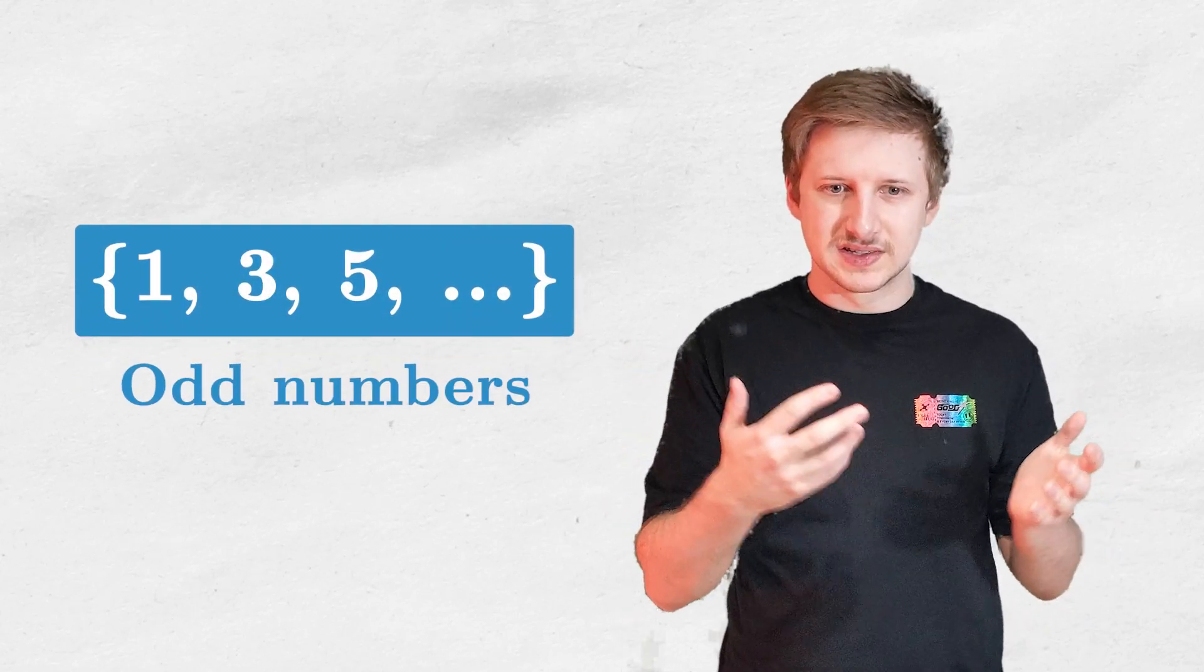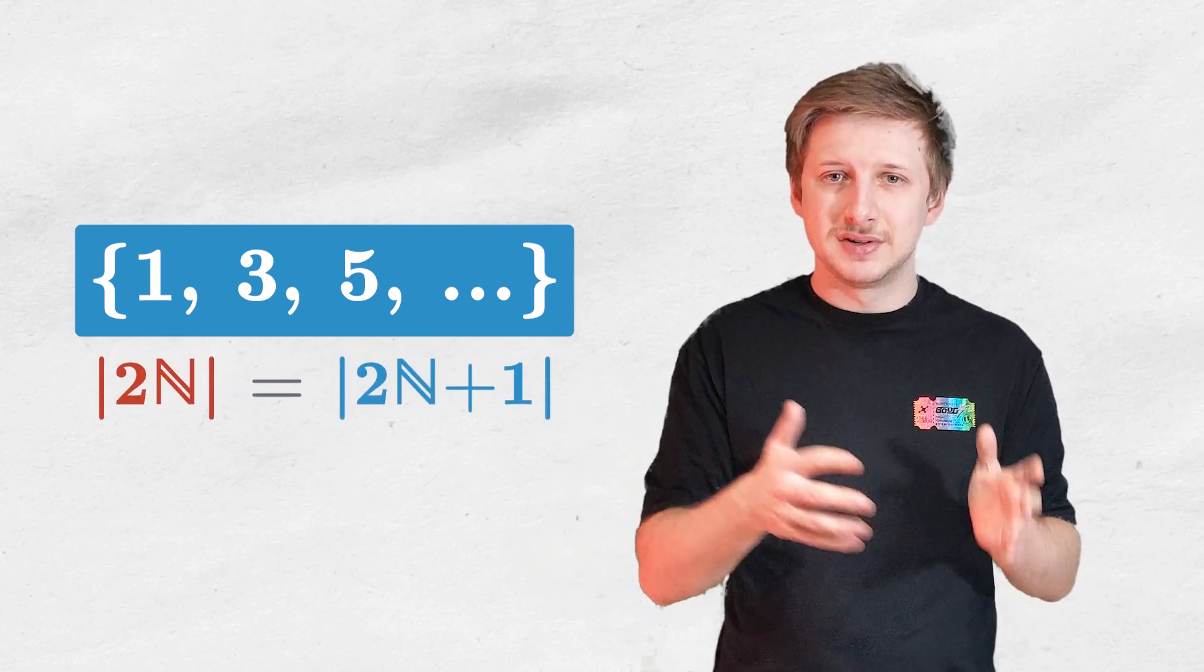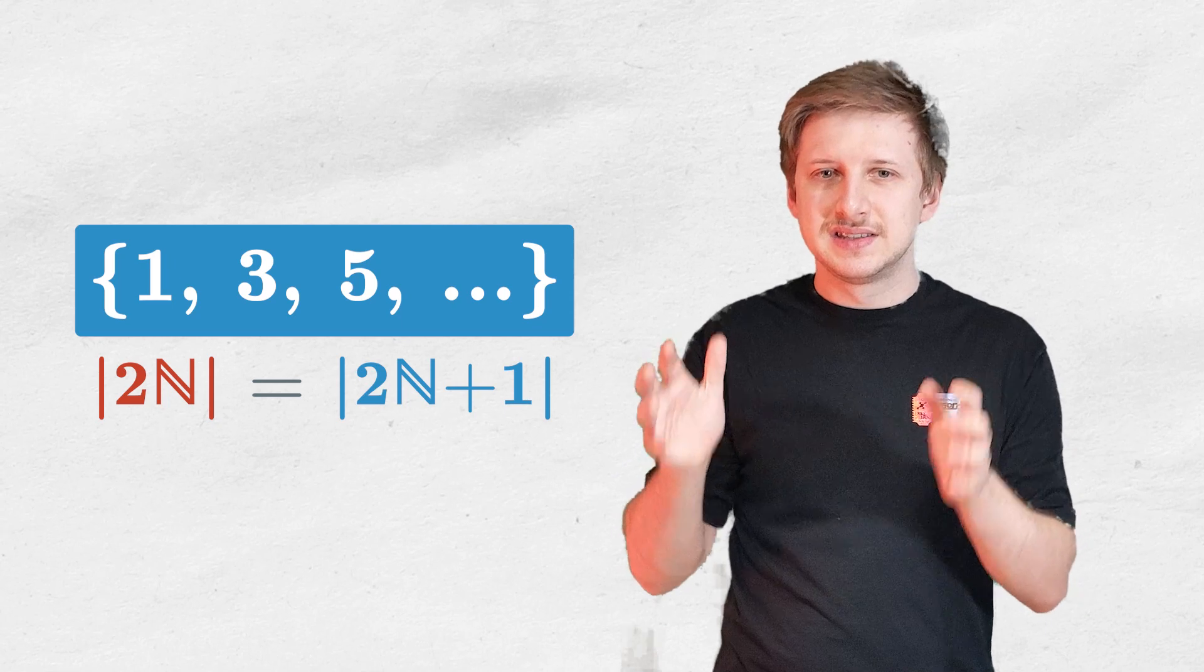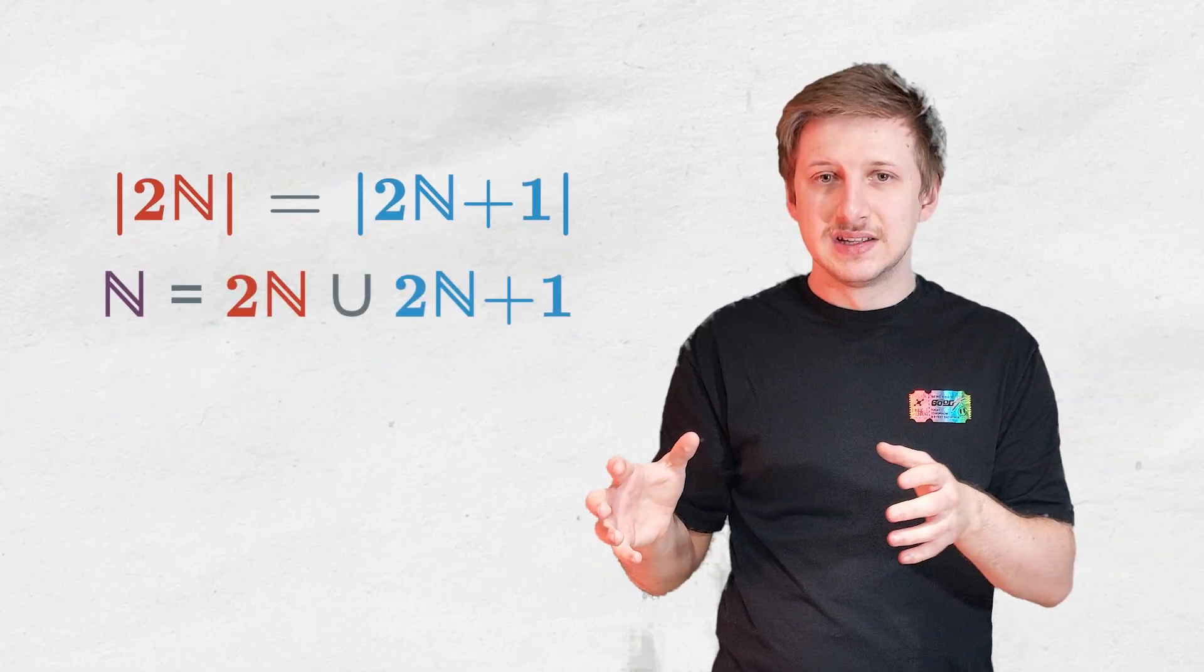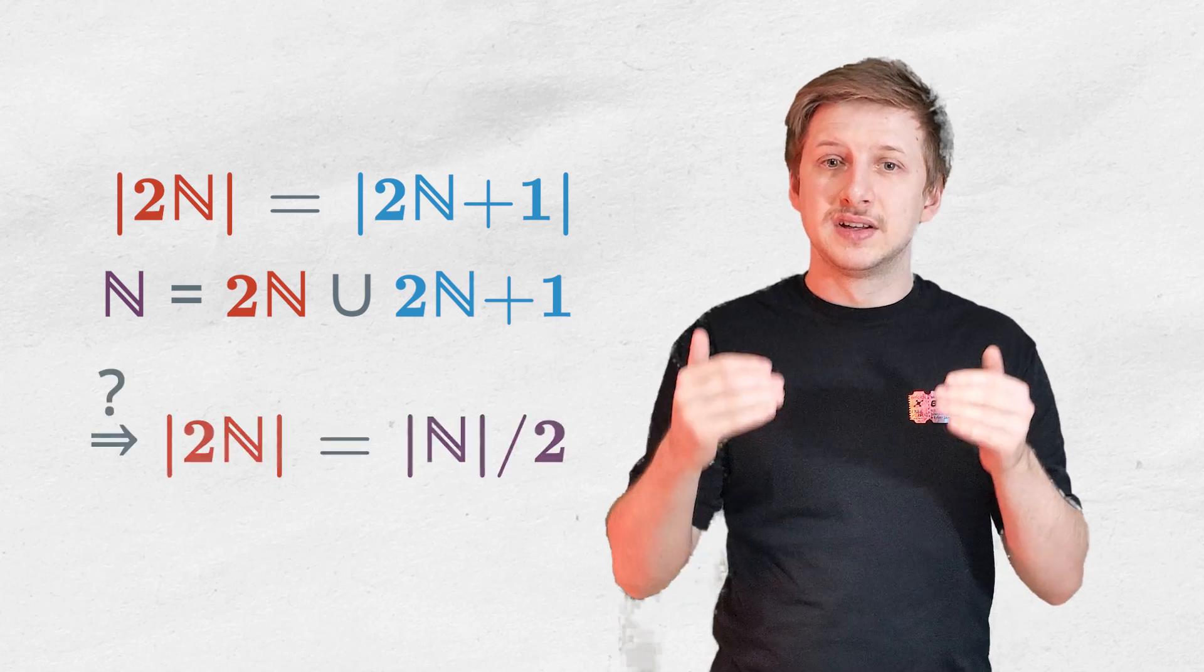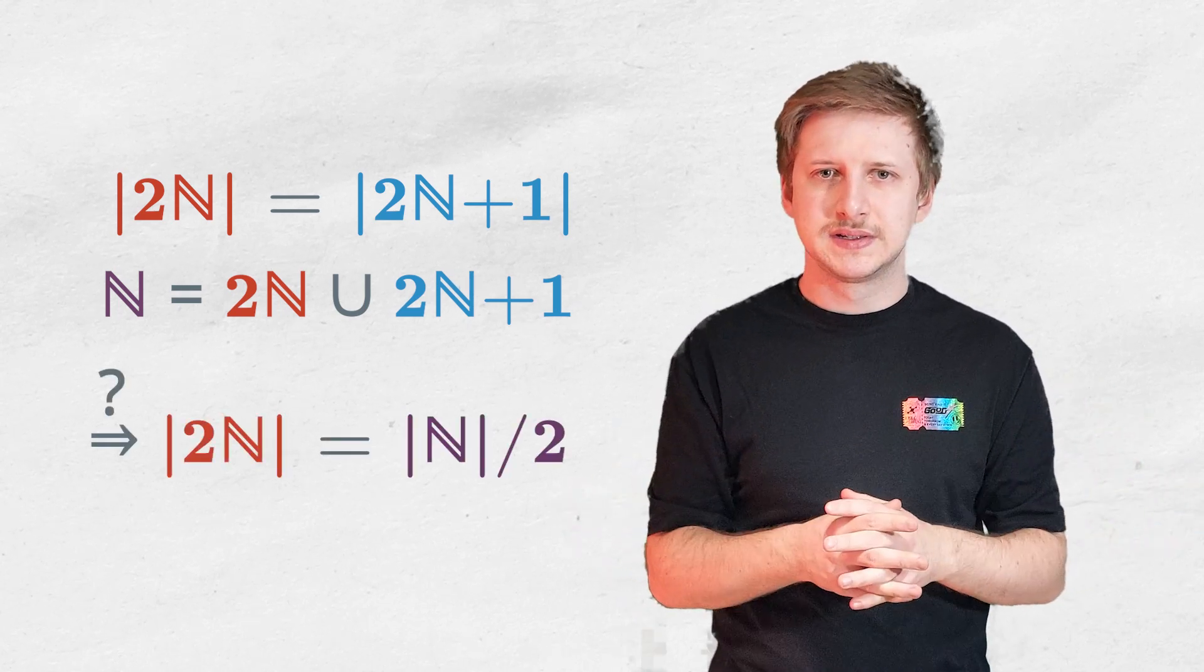But wait, there are numbers that are not even. Moreover, there are infinitely many of those, because all odd numbers are of course natural and not even. Intuitively speaking, there are as many even numbers as odd ones, and since naturals consist of even numbers and odd numbers, the set of evens should have exactly 2 times less numbers than the set of all numbers. Right?